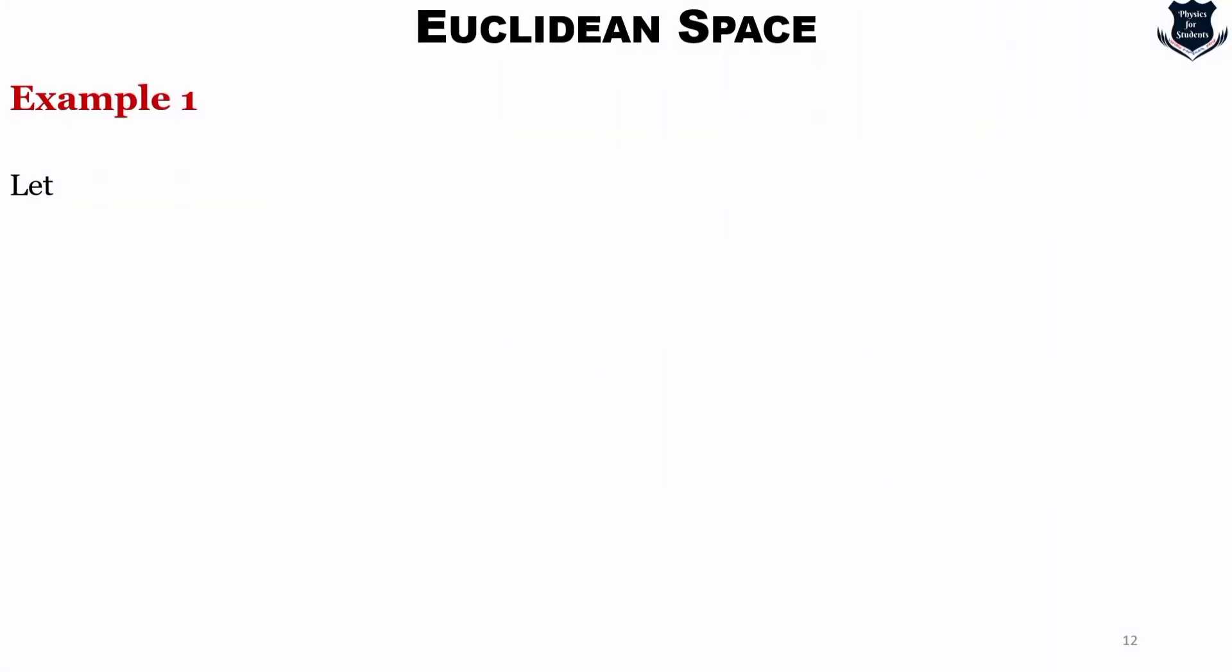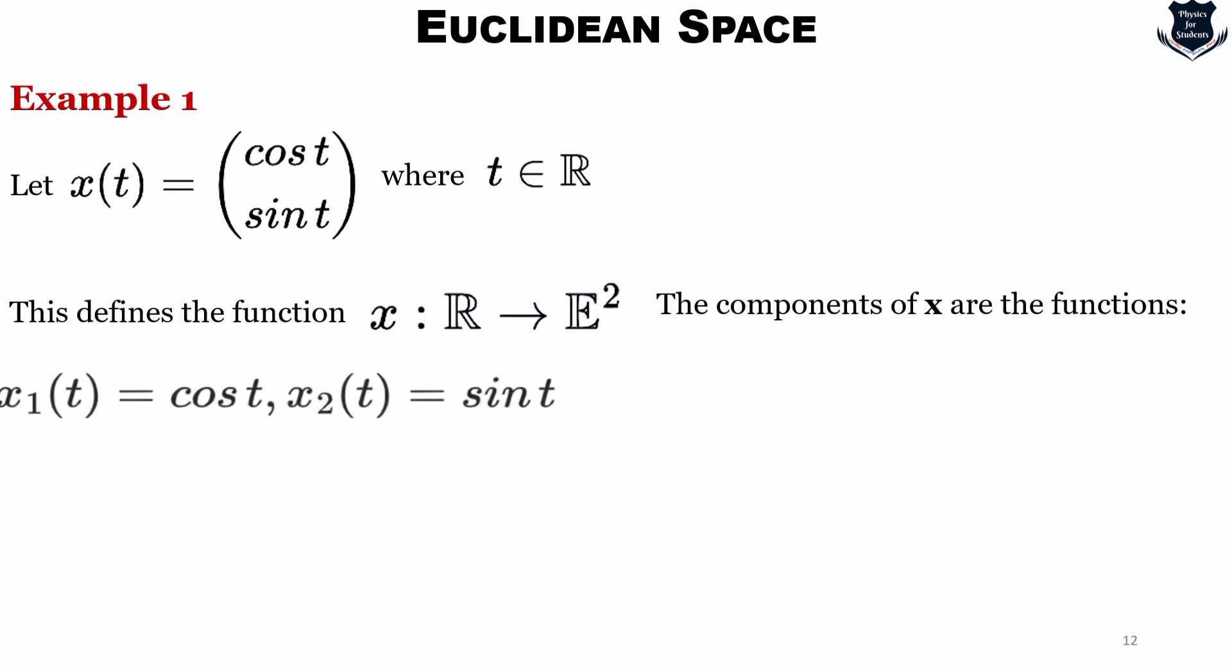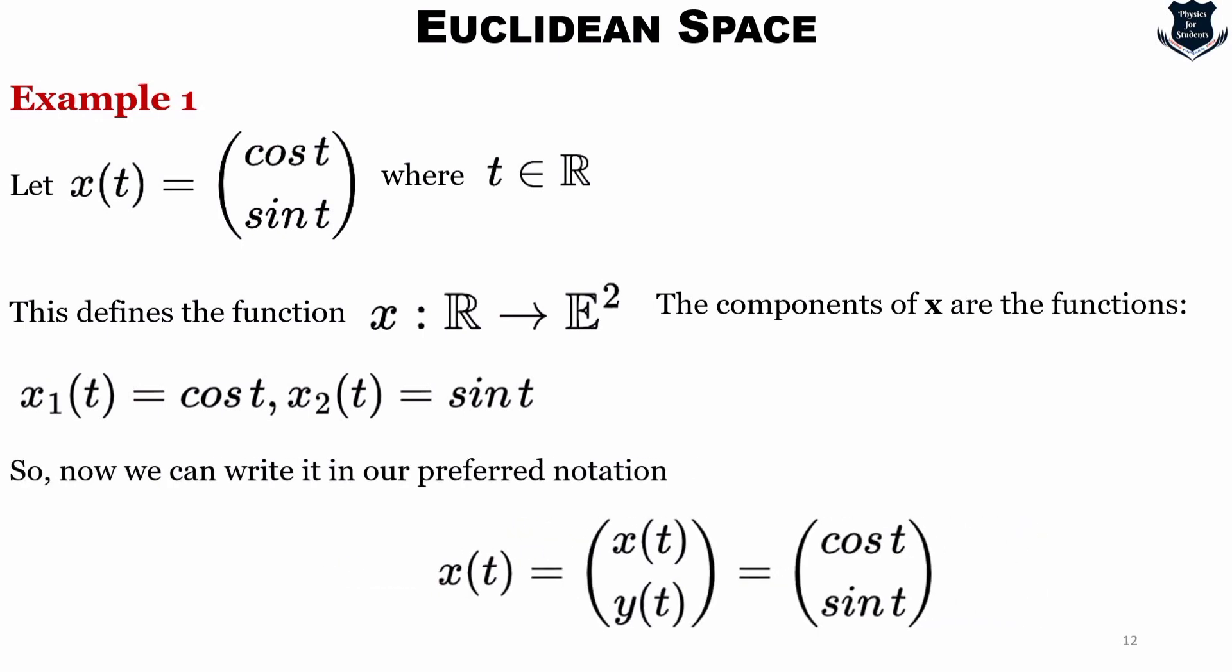Okay, I will just show you few examples to demonstrate how it happens. So let x(t) equals cos t, sine t, which is obviously where t is a family it includes the family of R. This defines a function. The components of x of these functions are denoted as this: x₁(t) equal to cos t, x₂(t) is equal to sine t, and it is perfectly acceptable that we can write in this notation and whatever the notation that you prefer. But make sure that you do not confuse with the x. And here you see that this is two-dimensional so we are talking of E².